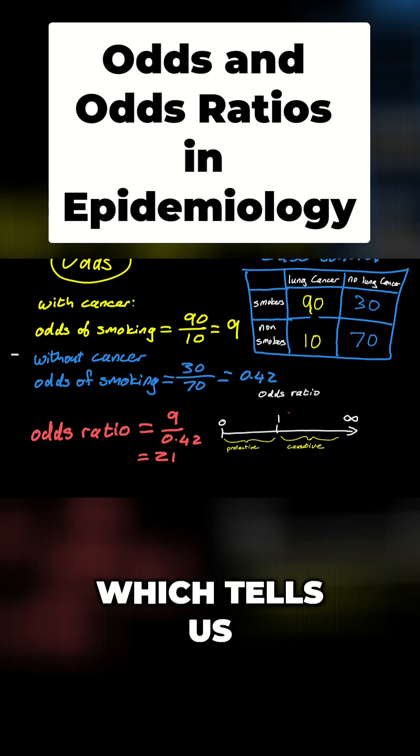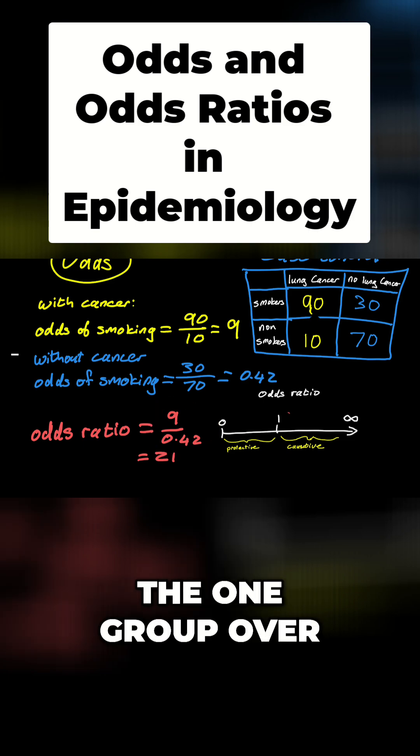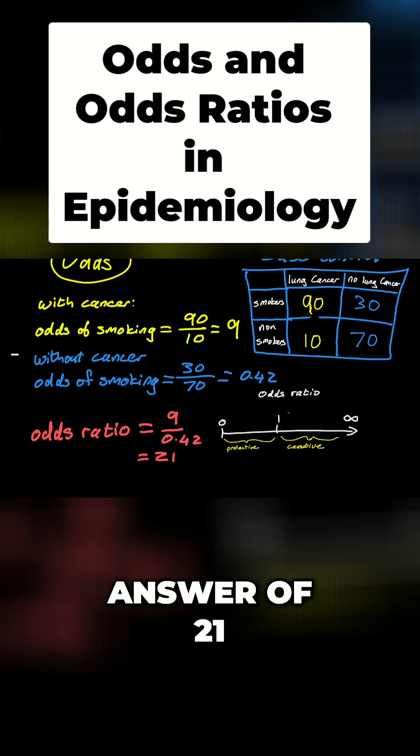The odds ratio, which tells us how much bigger the odds were in that group relative to the odds in the people without cancer, is nine over 0.42. So the odds in one group over the odds in the other group. And we get an answer of 21.